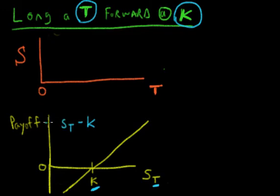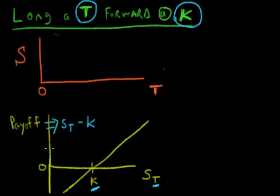So the payoff equals S_T minus K. What that means is that the payoff is positive when S_T is above K — you're going to be above zero, going up, when S_T is above K. And if S_T is below K, then you're going to have a payoff that is less than zero.